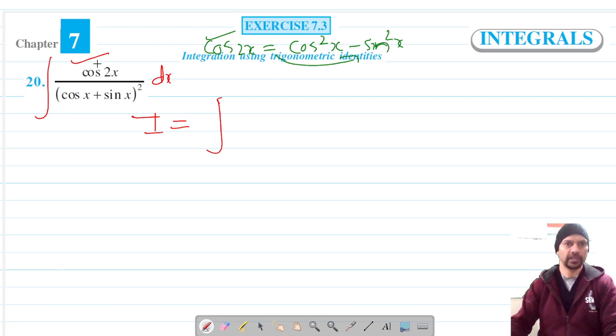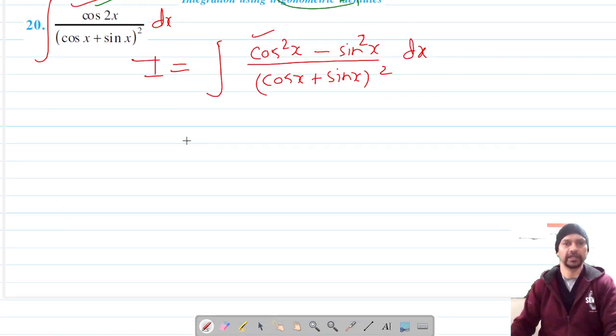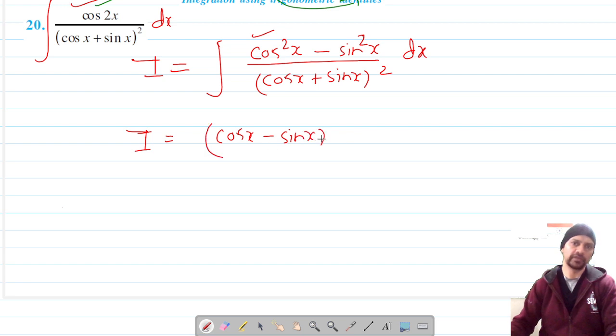Instead of cos2x, I can write it as (cos²x minus sin²x) upon (cosx plus sinx)² dx. This is a² minus b², so it becomes (a minus b)(a plus b) upon (a plus b)².